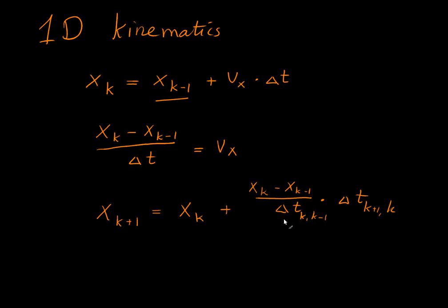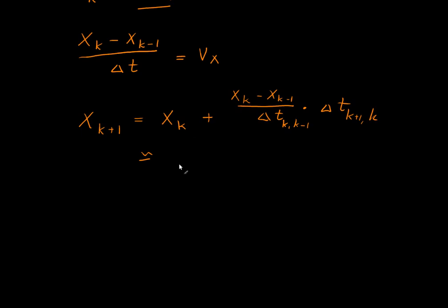If we have a steady stream of images, then these two time differences will cancel out. And we could simplify it to the following: x_K plus x_K minus x_K-1, or 2 times x_K minus x_K-1.